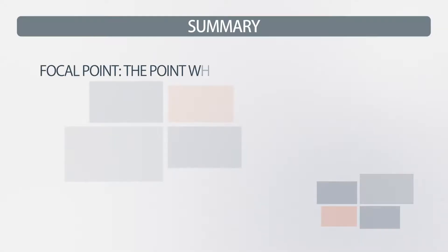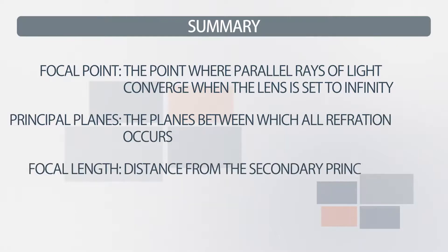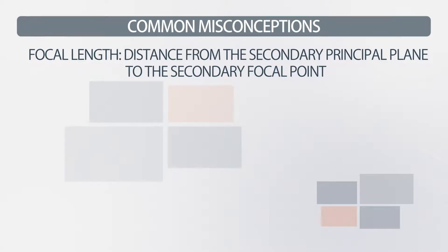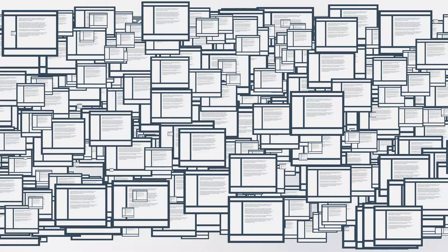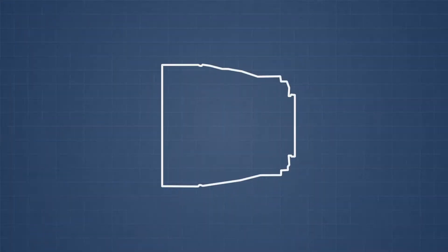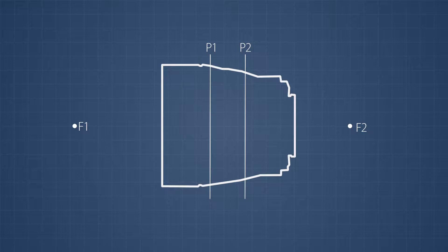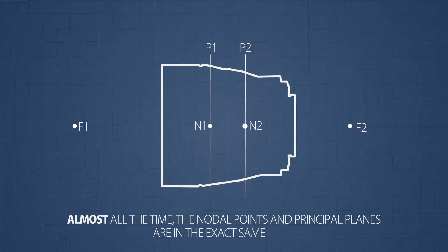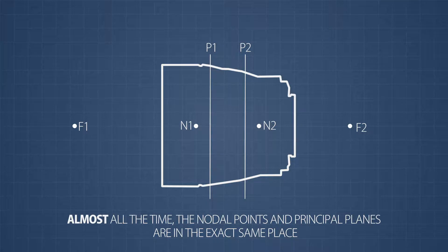Now that we know about the focal point and the principal plane, you should have a decent understanding of what focal length is measuring. Before we move on to the artistic side, I want to go over a few misconceptions. While doing research for this video, I ran across a ton of different sites explaining focal length, and most of them ended up being wrong. For example, I often see people use the term nodal point in place of principal plane. Like focal points and principal planes, there are also two nodal points, and almost all the time the secondary nodal point and the secondary principal plane are in the exact same place. However, there are cases in which the nodal points move because of changes in refractive index on either side of the lens, so using the term nodal point is not technically correct.